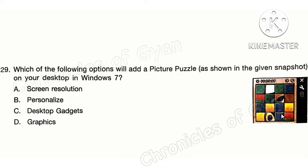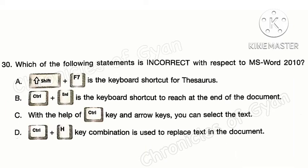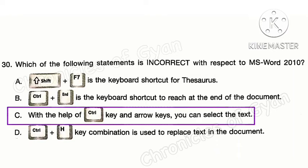Question 29. Which of the following options will add a picture puzzle as shown in the given snapshot on your desktop in Windows 7? Correct answer is option C: desktop gadgets. Question 30. Which of the following statements is incorrect with respect to MS Word 2010? Statements A, B, and D are correct. The incorrect statement is statement C: that with the help of the Control key and arrow keys you can select text.